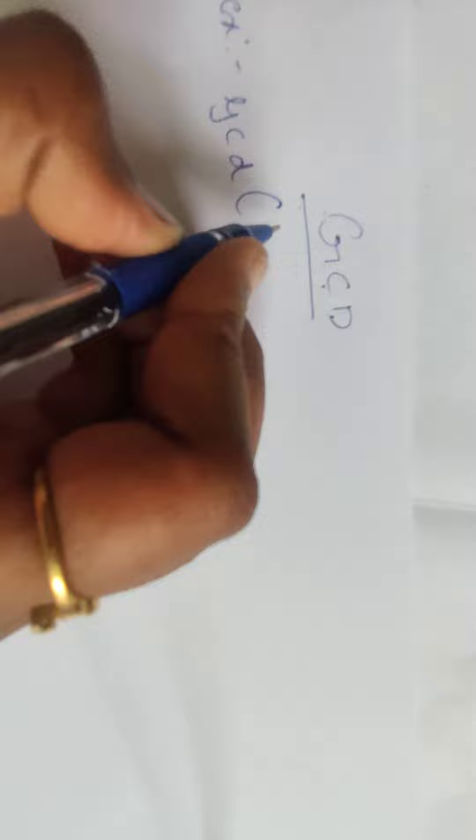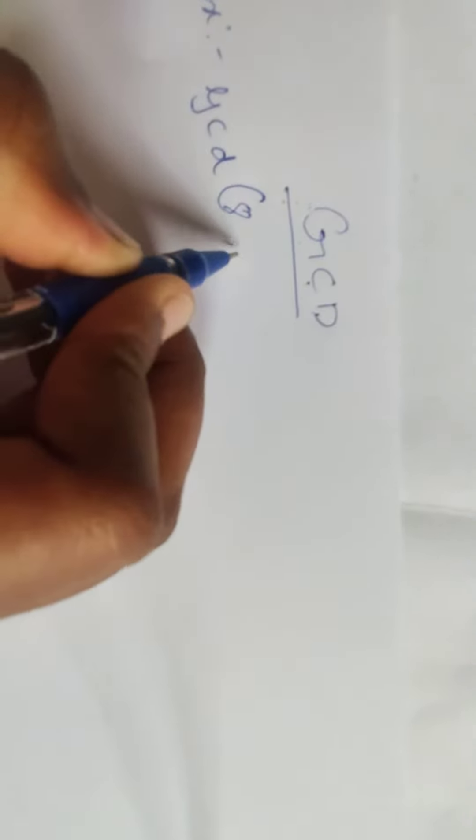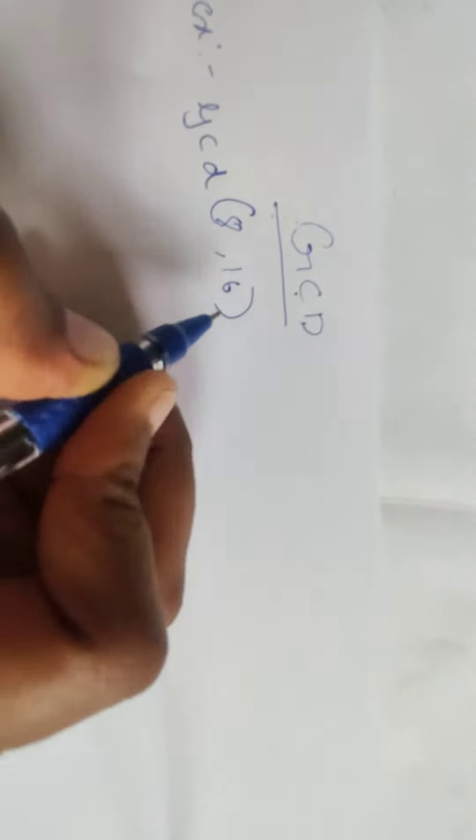Hi, today let's find out how to solve GCD of two numbers. GCD means greatest common divisor. Let's take an example - finding the GCD of 8 and 16. First, you have to find out the factors for 8 as well as for 16.